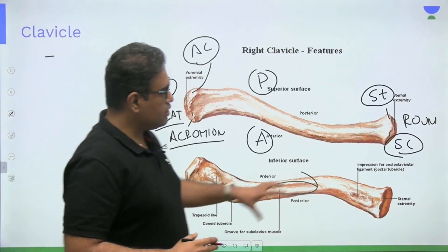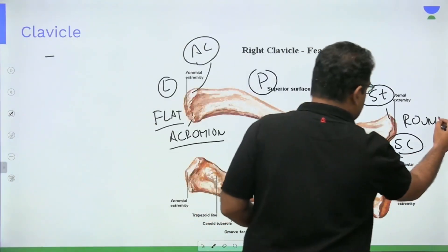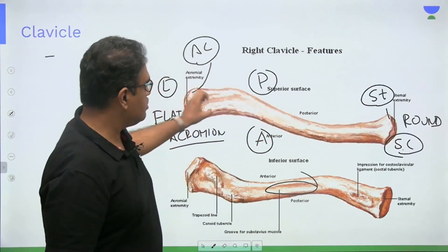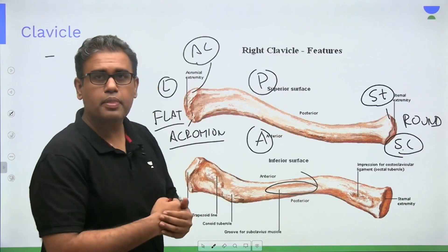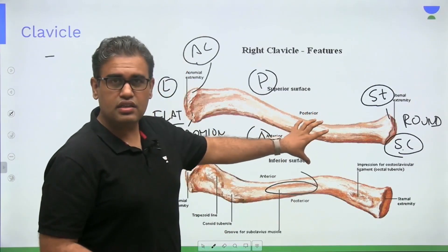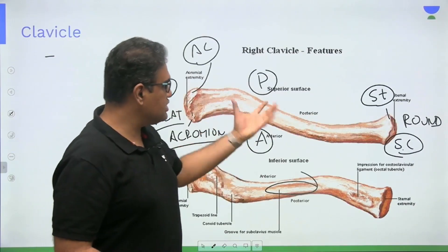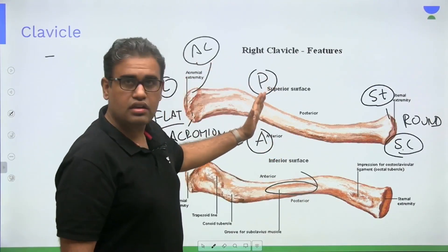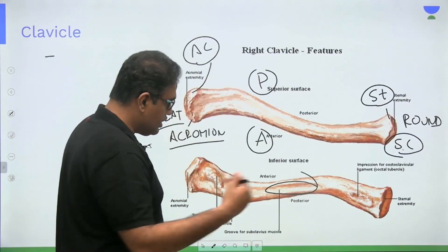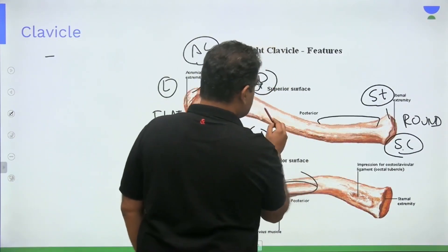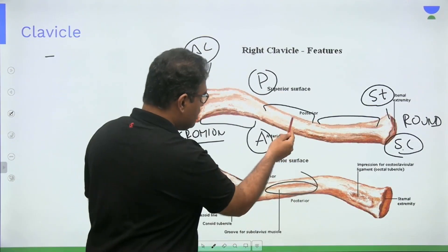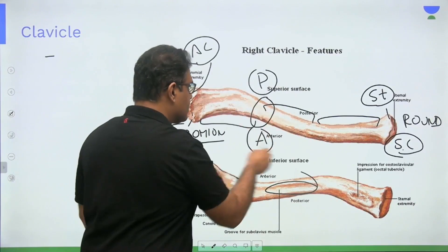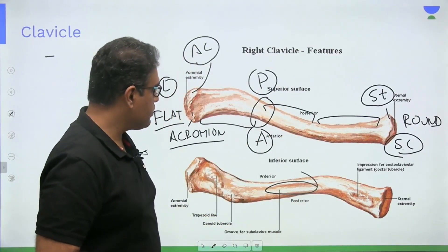The medial end of the clavicle is rounded and the lateral end is flat, so somewhere in the middle the shape changes. Therefore, when there is a fracture of the clavicle — one of the most common fractures of the upper limb — the bone breaks in the lateral part. Earlier it was said the fracture occurs at the junction of the middle and lateral one-third, but it is generally around the lateral half where the fracture is most commonly found.